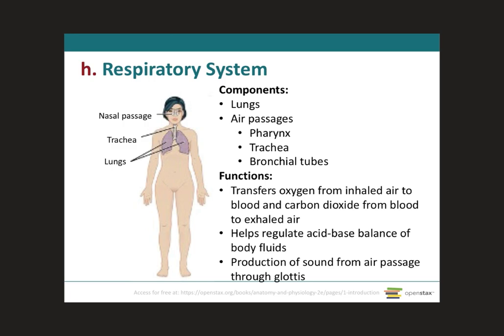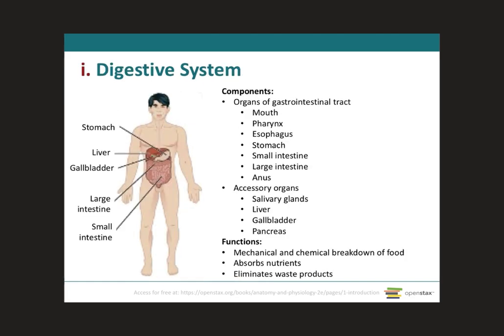The respiratory system components include the lungs, air passages, pharynx, trachea, and bronchial tubes which take air into the lungs. Its main function is to transfer oxygen from inhaled air to the blood carrying carbon dioxide coming from the heart. It also helps regulate the acid-base balance of body fluids, and because of the glottis in the larynx, it helps with the production of sound.